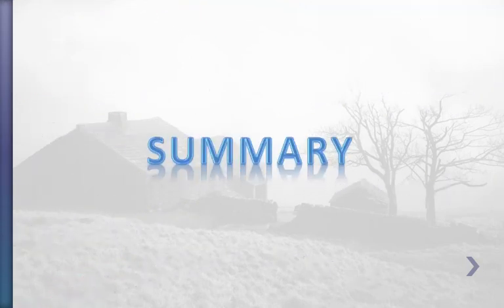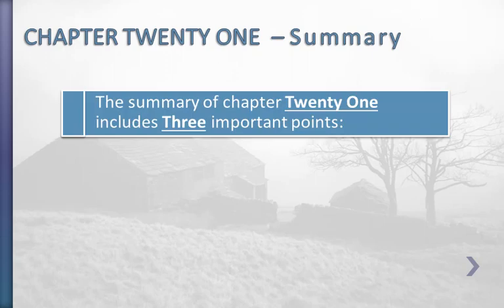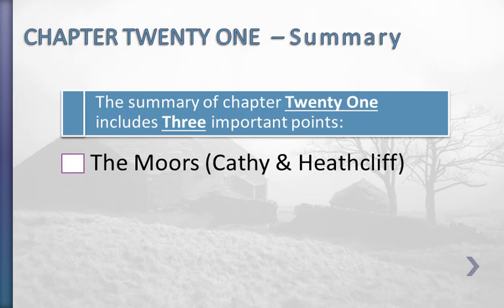Now, moving on to the summary of Chapter 21. The first point is about the Moors, Kathy and Heathcliff. Three years later, with the memory of Linton erased from her mind, Kathy and Nellie are exploring the Moors. Kathy moves more quickly than Nellie, and before Nellie can stop them, Kathy is speaking with Heathcliff. While speaking with Heathcliff, Kathy notices Hareton and remarks that she has met him before. Heathcliff mentions that she has met his son before, and encourages Kathy and Nellie to visit his house.